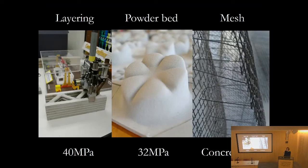To summarise the different methods — layering, powder bed, and mesh: compressive strengths for the layering technique can now reach up to 40 MPa. The powder bed achieves slightly less. With the mesh method, strength is more dependent on the concrete poured inside the mesh.